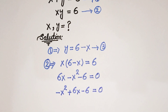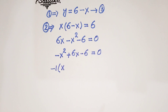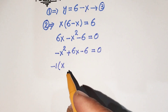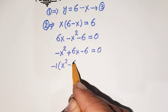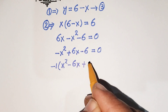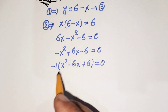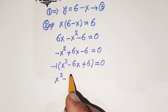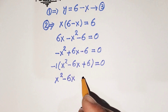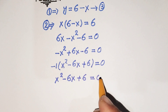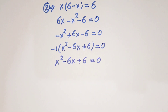This is in descending order, so we take minus 1 as common. Dividing both sides by minus 1, we get x squared minus 6x plus 6 equals 0. So now we have the standard quadratic form: x squared minus 6x plus 6 equals 0.